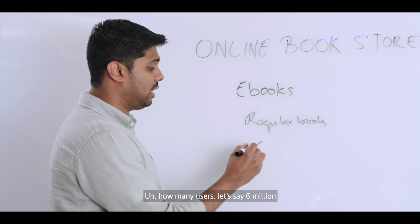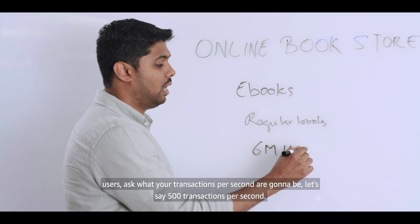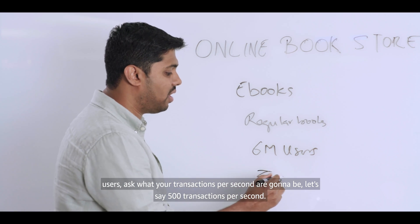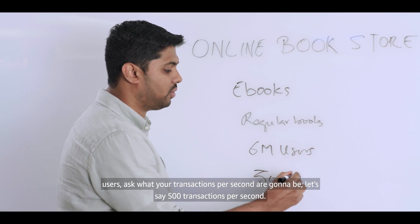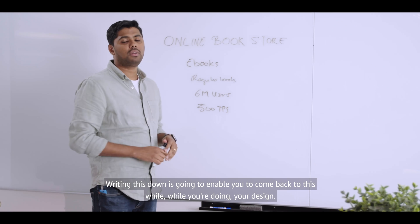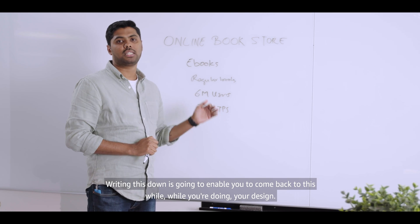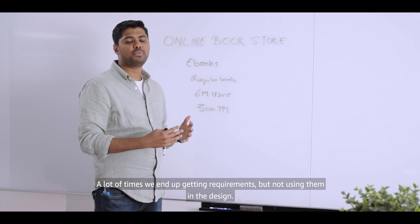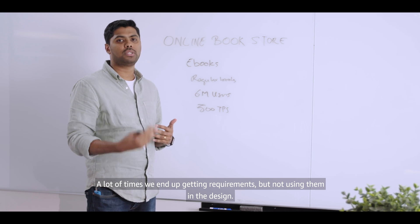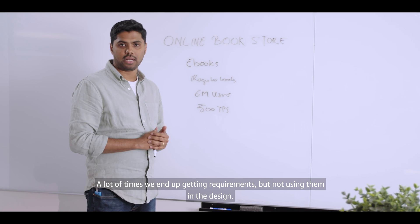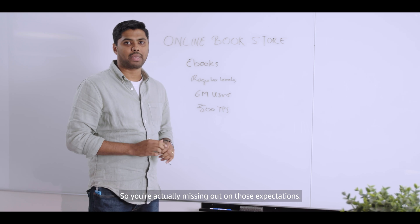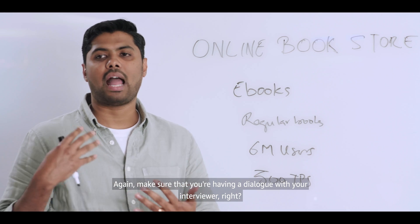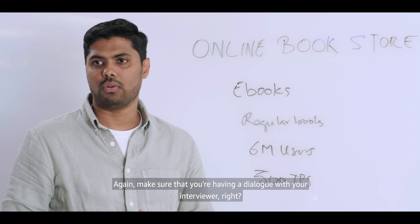You can start asking questions on scale: how many users? Let's say six million users. Ask what your transactions per second are going to be — let's say 500 transactions per second. Writing this down is going to enable you to come back to these requirements while you're doing your design, because a lot of times we get requirements but don't use them, and end up missing those expectations.